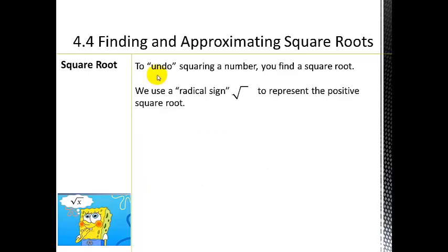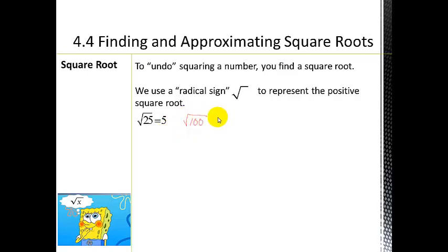To undo squaring a number you find the square root. We use what we call the radical sign to represent the positive square root. So the square root of 25 equals 5, and the square root of 100 equals 10 — notice we're not getting negative 10, because the radical sign gives us the positive root. The square root of 36 is 6; these are all whole integers.